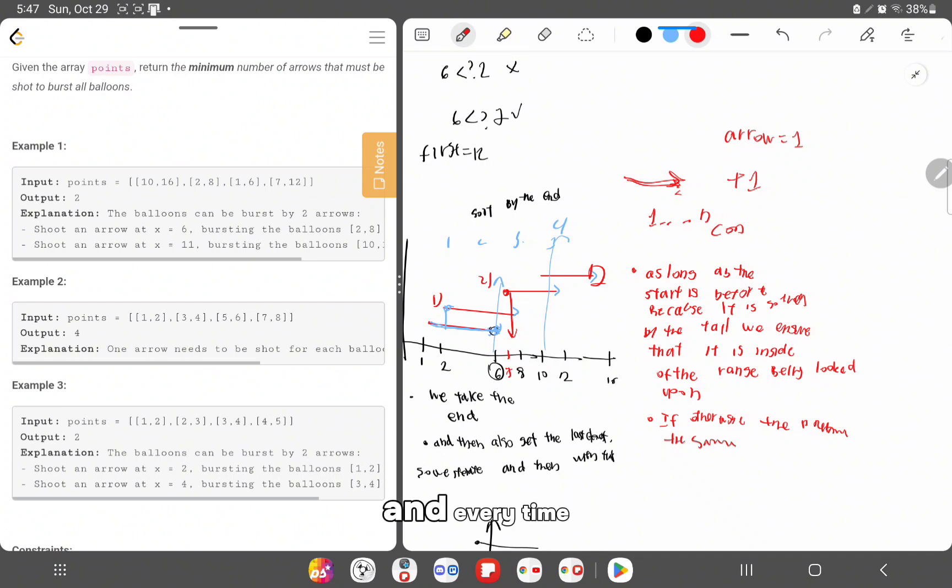And every time you find a range, the range start that is larger than the current range, we increase the arrow count. And we also update the arrow range by the new balloon end.